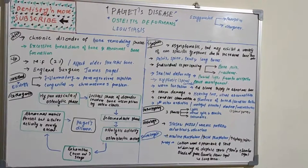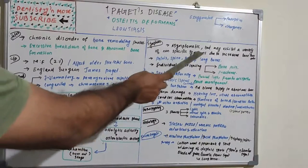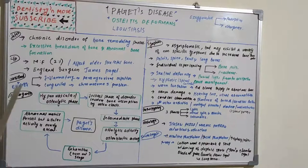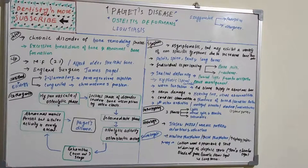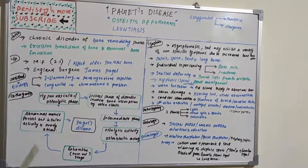In terms of symptoms, Paget's disease is usually asymptomatic in the earlier stages but may exhibit a variety of non-specific symptoms due to increased bone remodeling. It commonly affects the pelvis, spine, skull, and long bones. Individuals experience bone pain and fractures. Skeletal deformities include bowing of legs, frontal and occipital skull enlargement, and kyphosis — a spinal problem where the patient bends slightly forward.